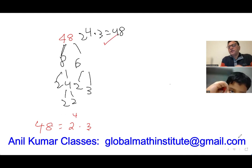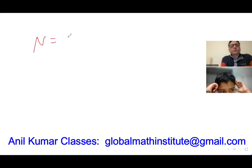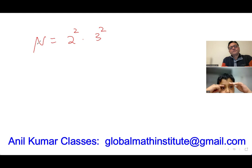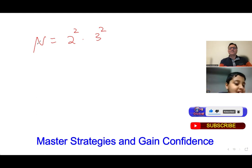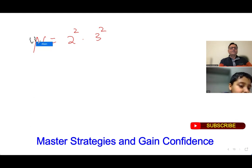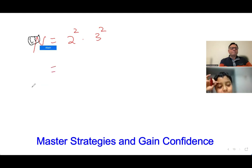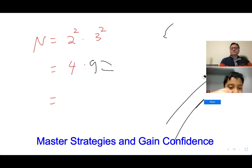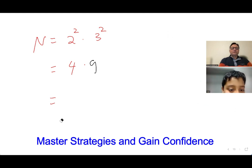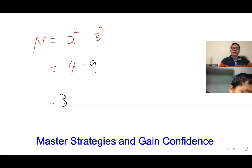Now, if I give you the prime factorization and ask for the number: n equals 2 to the power of 2 times 3 to the power of 2. What is n? 2 squared is 4, and 3 squared is 9. So 4 times 9 equals 36.